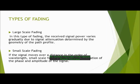Types of fading: Large scale fading — in this type of fading, the received signal power varies gradually due to signal attenuation determined by the geometry of the path profile. Small scale fading — if the signal moves over a distance in the order of wavelength, small scale fading leads to rapid fluctuation of the phase and the amplitude of the signal.